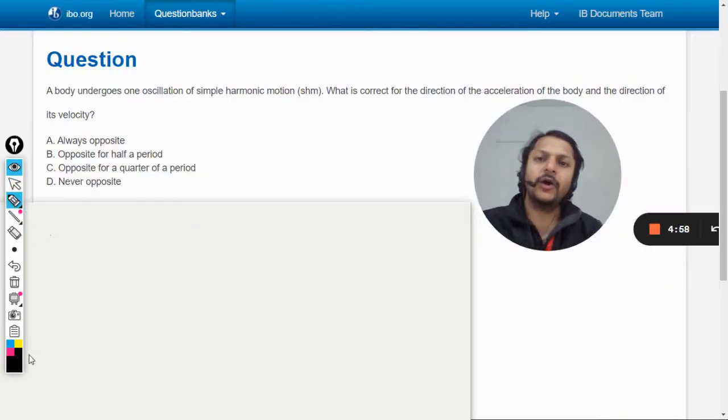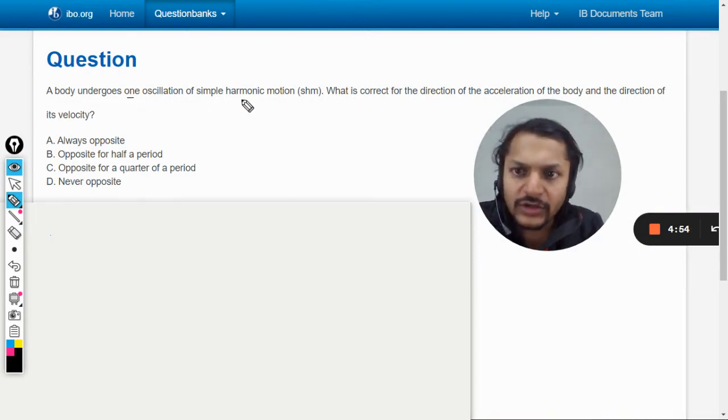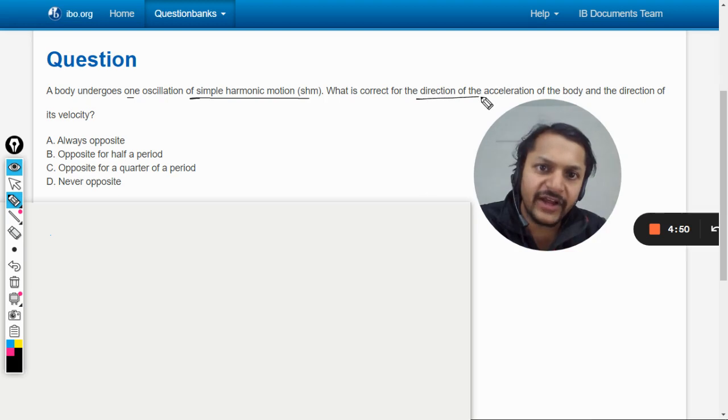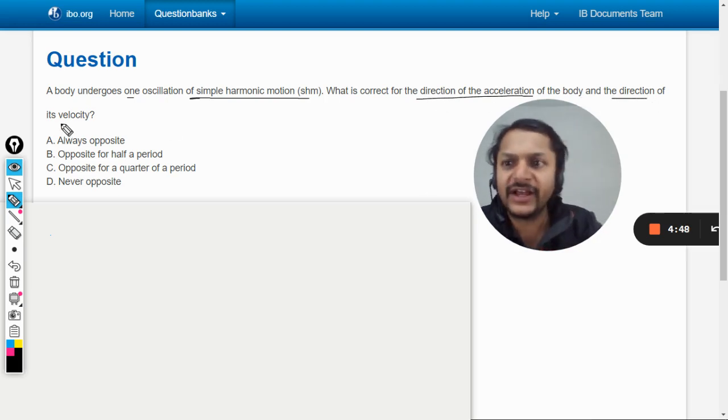Okay, dear students, let's see how we're going to do this question. A body undergoes one oscillation of simple harmonic motion. What is correct for the direction of acceleration of the body and the direction of its velocity? So they're talking about the direction of acceleration and the direction of velocity.